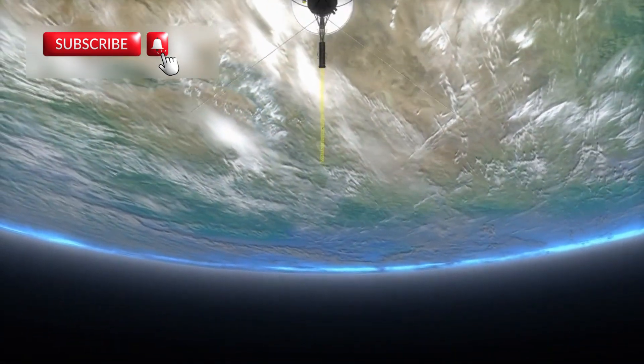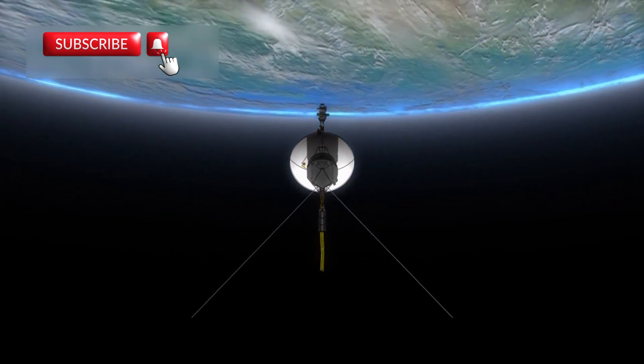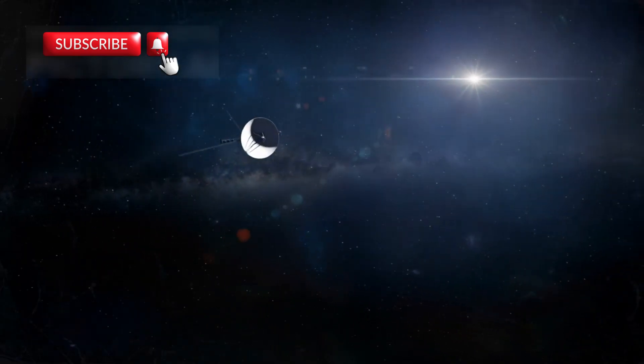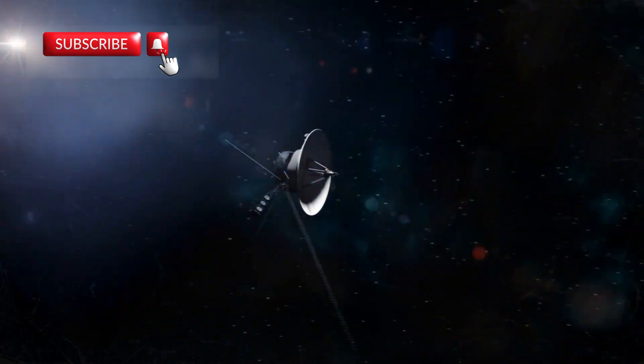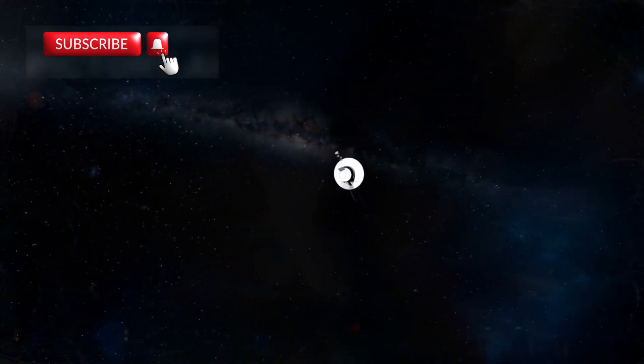This power is fading, so NASA has shut down many systems to keep only the most important ones running, helping the spacecraft stay alive. Voyager 1 must also survive extreme space conditions, including temperatures around 400 degrees Fahrenheit and constant cosmic radiation.